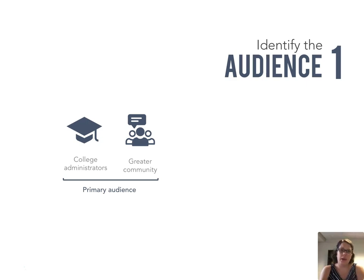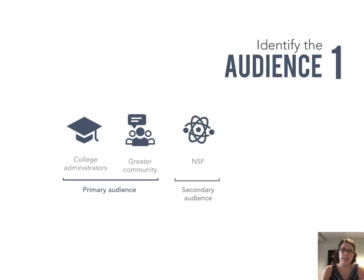For an example of a primary audience, perhaps you're building a one-page report to give information about your program — that could be your college administrators if you're trying to get increased funding, or it could be the greater community to provide outreach on your project and encourage more participation. You also want to think about that secondary audience. For our project, we're funded by the National Science Foundation, so the NSF serves as a secondary audience, and information on our report should also be understandable to that audience.